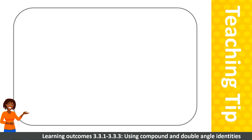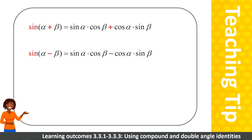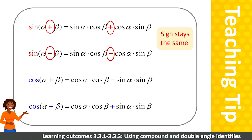To illustrate that again: sine starts with S, so the sign stays the same. Cos starts with C and stands for change, so the sign in the identity changes. Let's watch a video of a lecturer applying compound angle identities. This example also works with special angles.